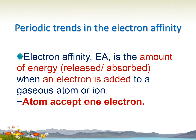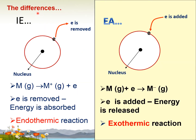We need that atom to accept one electron. It is the opposite of ionization energy. The difference between IE and EA — as we learned before in lesson 19 — ionization energy is the process of removing one mole of electrons. When energy is absorbed, meaning it is an endothermic reaction.